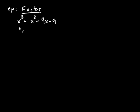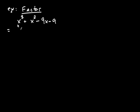With grouping, you often group either the first two terms and the second two terms, or you leave one term alone and then group the last three terms. In this example, I'm going to group the first two terms. I'm going to draw a little arc here — that arc doesn't have any mathematical meaning, it just tells me I'm thinking about these two terms together. And likewise, another arc indicates I'm thinking about those two terms together.